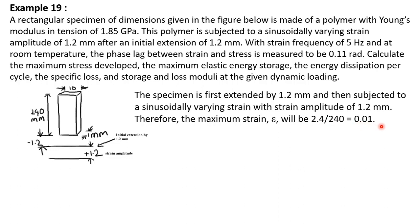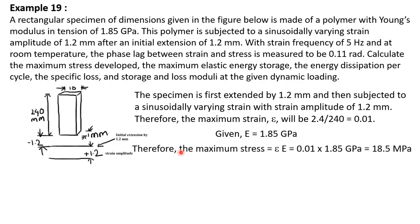So 0.01 is the maximum strain. The given Young's modulus in tension is 1.85 gigapascal. Therefore, the maximum stress will be equal to the maximum strain multiplied by the Young's modulus: 0.01 multiplied by 1.85 gigapascal, which is equal to 18.5 megapascal. This is the maximum stress that this specimen will experience.